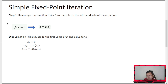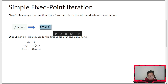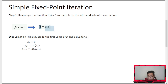Step one is to rearrange. Originally, this is our function: f(x) is equal to zero. We need to convert this into a general form where x is equal to g(x). Basically, x is the variable and the right-hand side is another function of x. We need to isolate one variable — one unknown — on the left side, while the right side also contains that same unknown x.